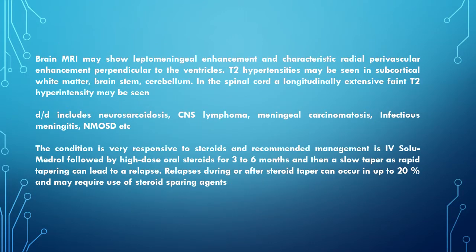Brain MRI may show leptomeningeal enhancement and characteristic radial perivascular enhancement perpendicular to the ventricles. T2 hyperintensities may be seen in the subcortical white matter, brainstem, and cerebellum. In the spinal cord, a longitudinally extensive faint T2 hyperintensity may be seen.